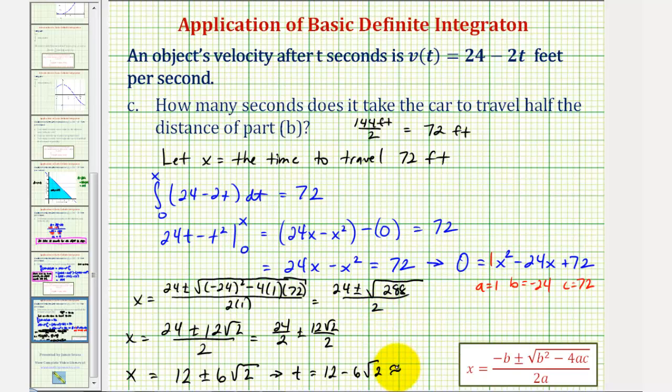Let's also get a decimal approximation for this. This will be approximately 3.5147 seconds. So to answer the question, it takes 12 - 6√2 seconds to travel 72 feet.